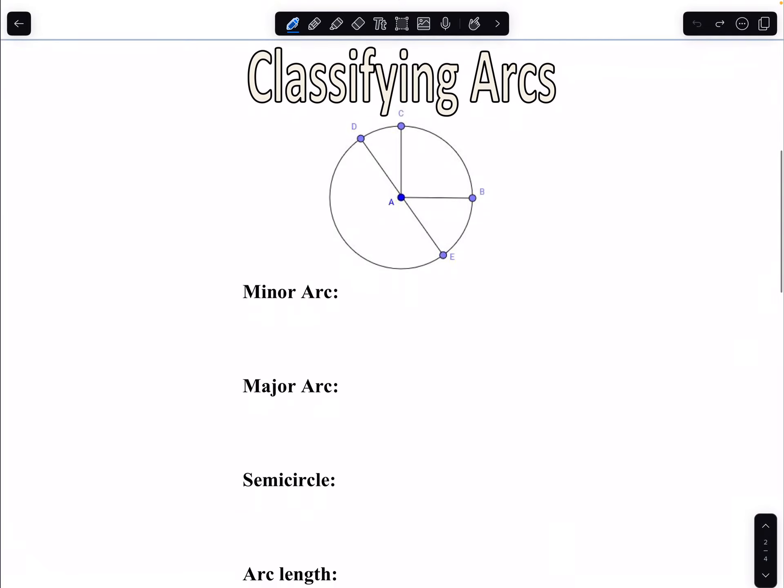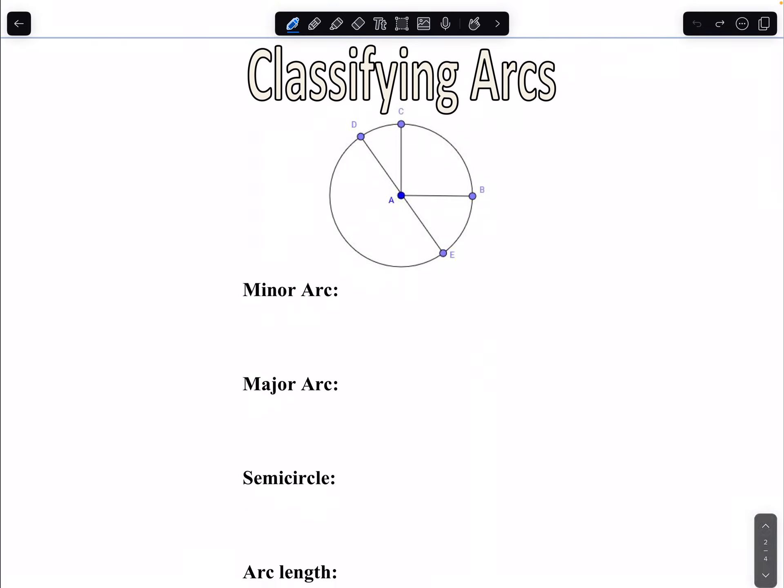So when we refer to an arc, we're talking about a portion of the circle, right? An arc, since the circle does not have segments and it doesn't have sides, we're going to be dealing with parts of a circle, which are arcs. That's considered an arc. So we have different types of arcs. We have minor, major, and semicircle.